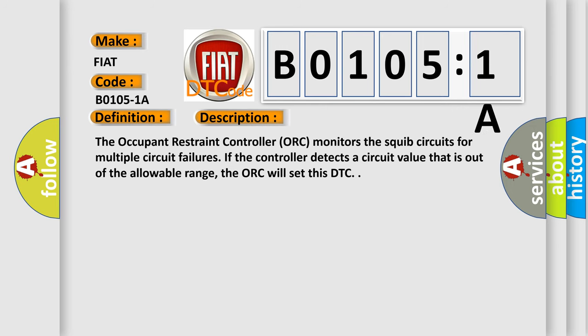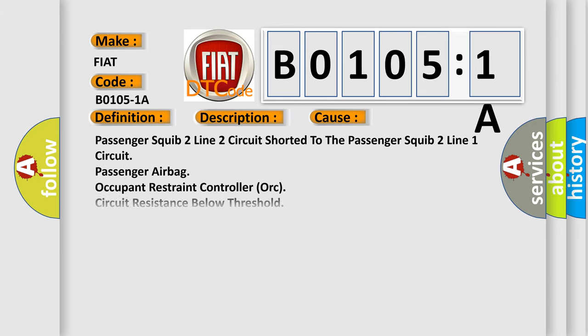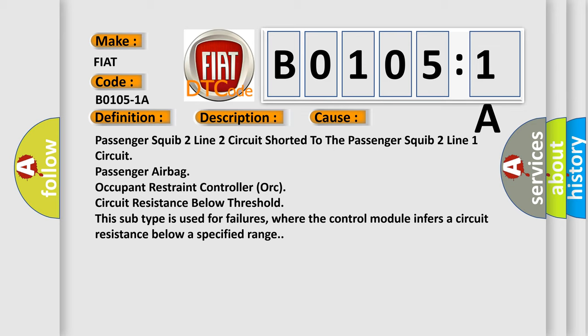The occupant restraint controller ORC monitors the squib circuits for multiple circuit failures. If the controller detects a circuit value that is out of the allowable range, the ORC will set this DTC. This diagnostic error occurs most often in these cases: passenger squib 2 line 2 circuit shorted to the passenger squib 2 line 1 circuit, passenger airbag occupant restraint controller ORC circuit resistance below threshold. This subtype is used for failures where the control module infers a circuit resistance below a specified range.